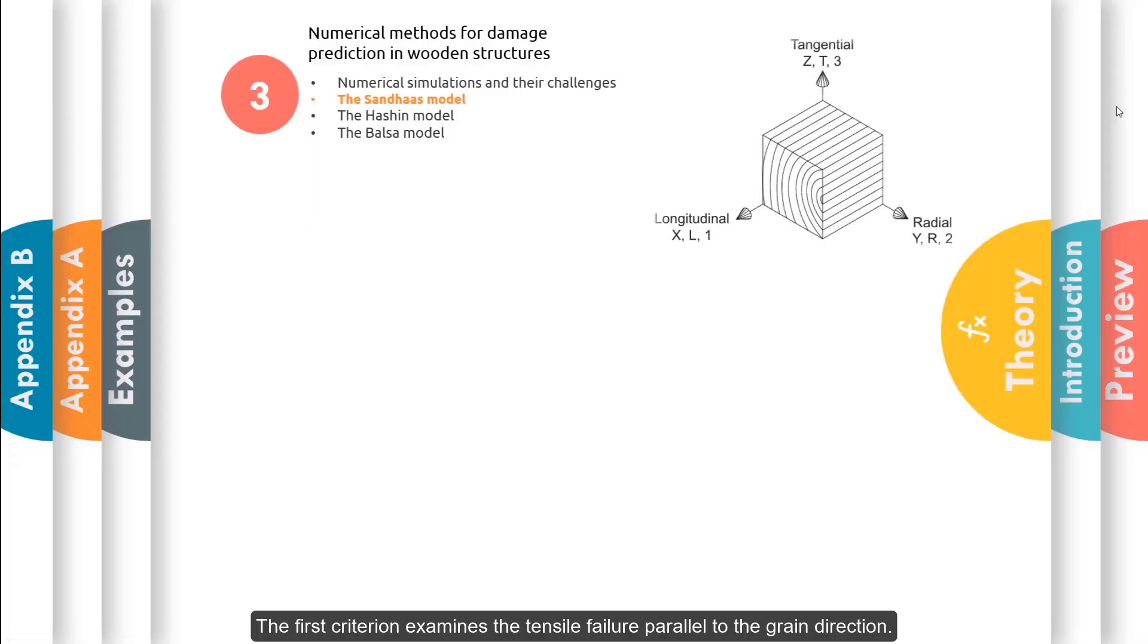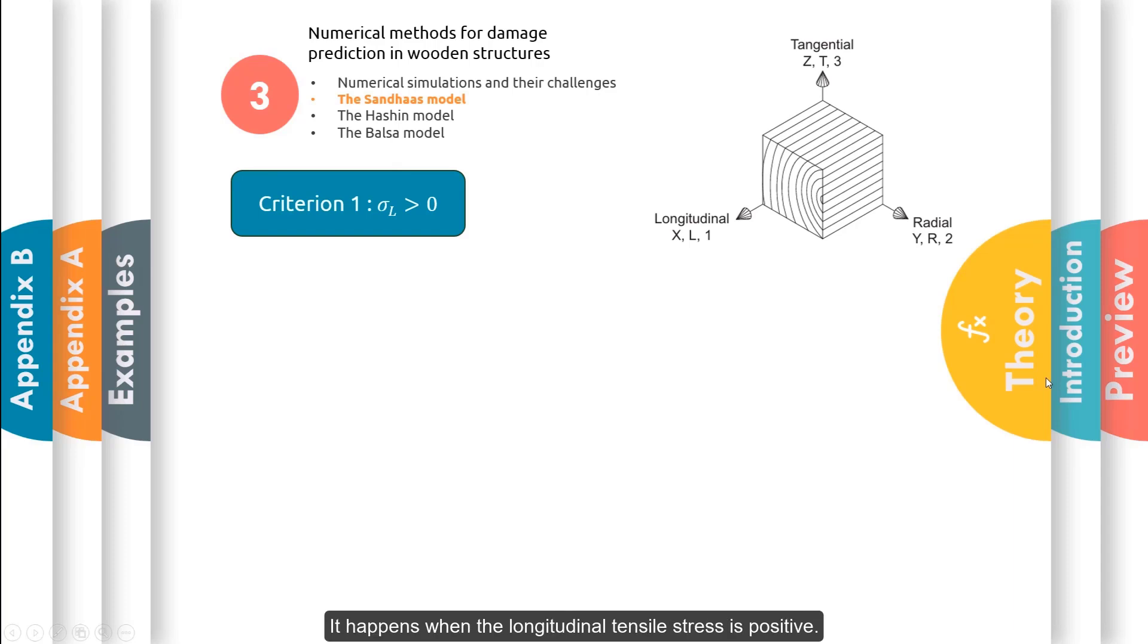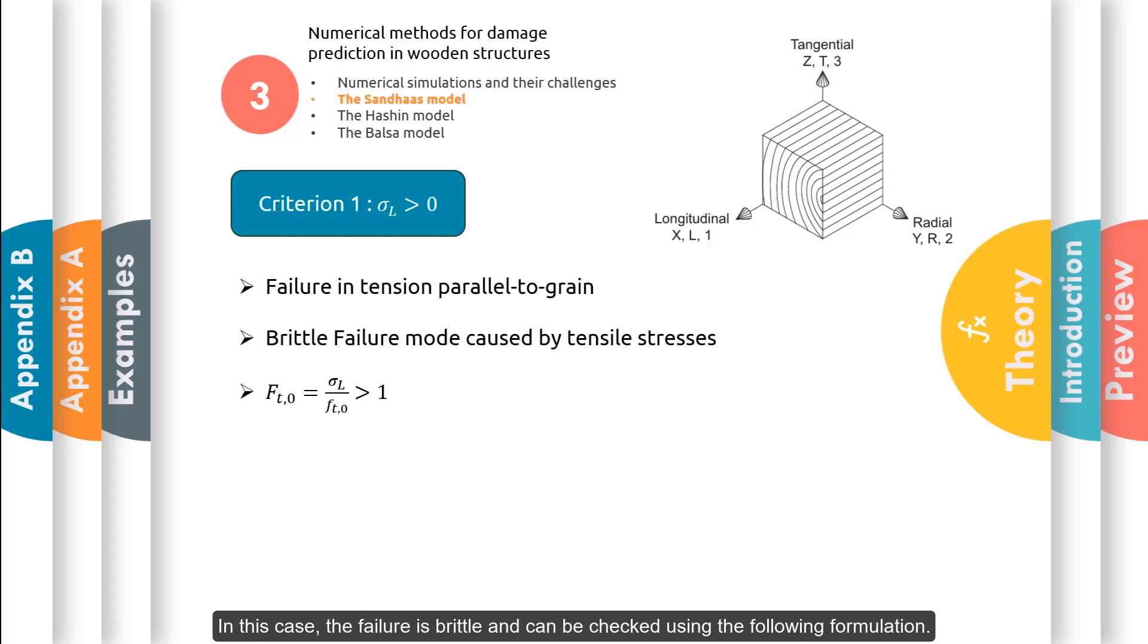The first criterion examines the tensile failure parallel to the grain direction. It happens when the longitudinal tensile stress is positive. In this case, the failure is brittle and can be checked using the following formulation.